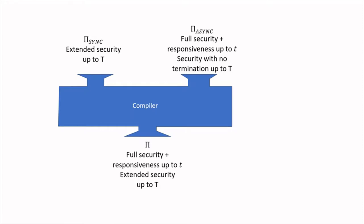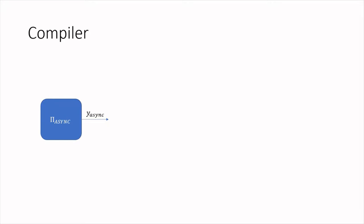Therefore, the idea is that instead of taking a plain asynchronous protocol with security up to small t corruptions, we use one that also achieves some level of security even when there are large T corruptions — specifically, correctness and privacy are maintained, but parties may not be able to obtain output. This two-threshold asynchronous MPC protocol can be obtained by modifying existing protocols. In our paper, we modify the protocol by Cohen, which is based on homomorphic encryption, though one can also modify other protocols to achieve these two-threshold properties. In the rest of the talk, I will focus on the design of the compiler.